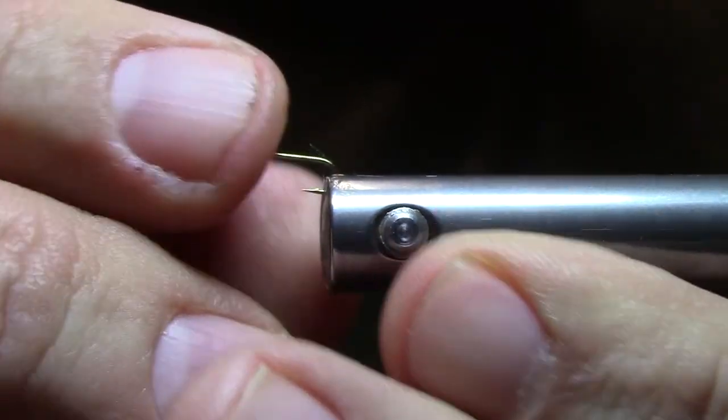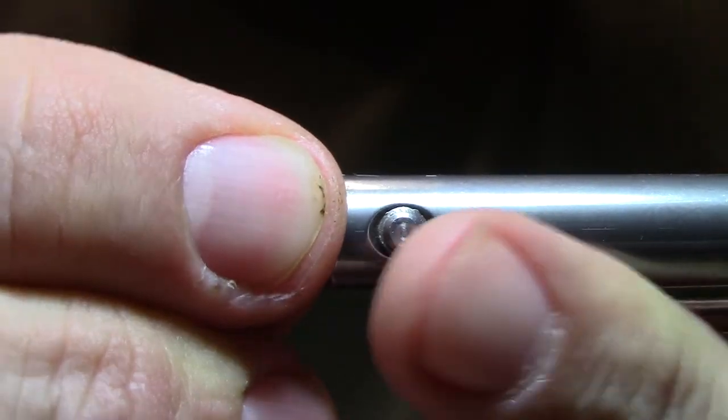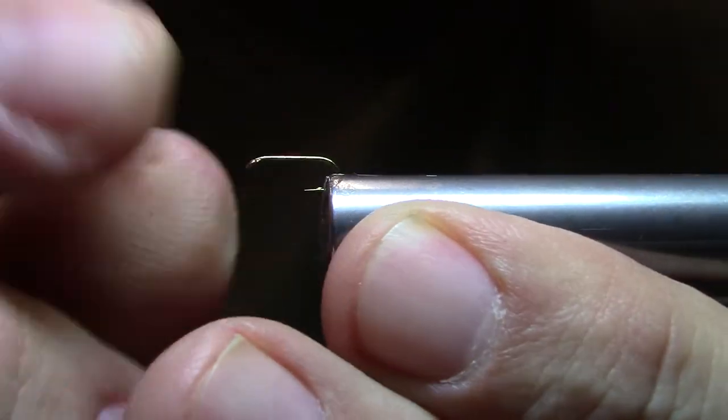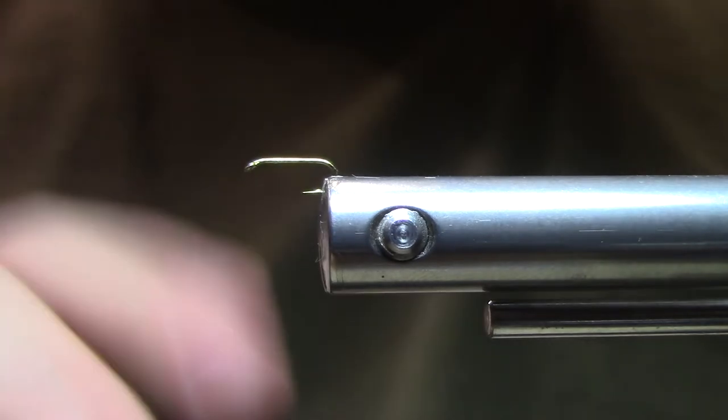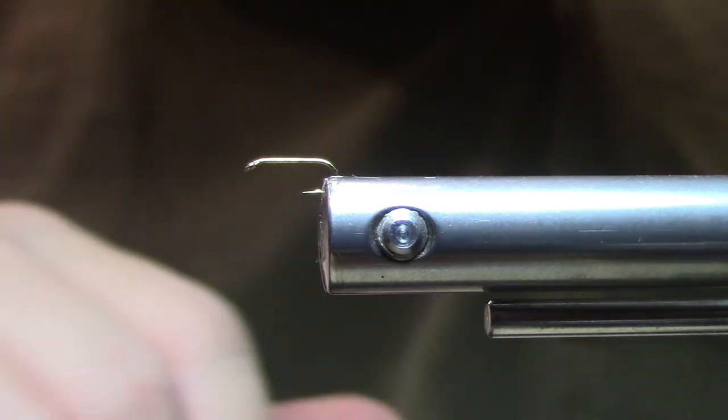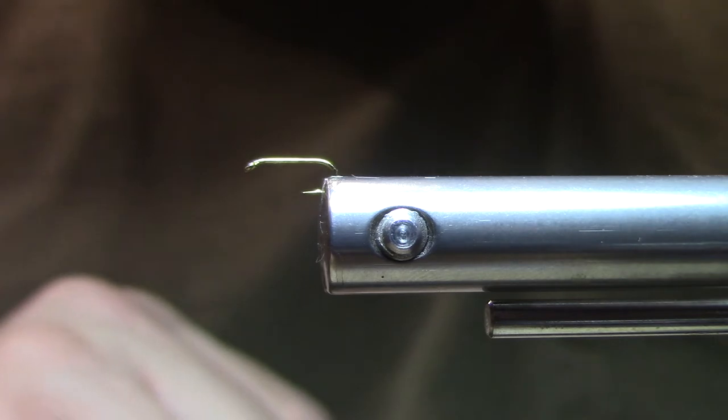And, you know, maybe he didn't care. He just tied it, it worked, and he continued to tie it. So I've got another hook in the vise. By the way, these are Allen F001 dry fly hooks in size 20.